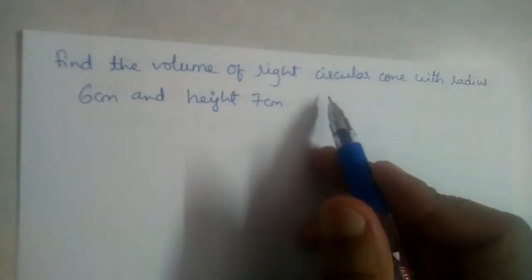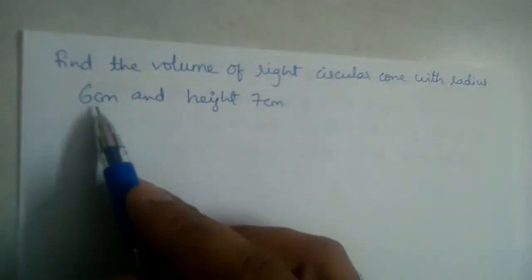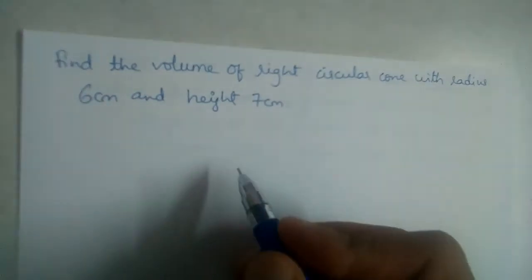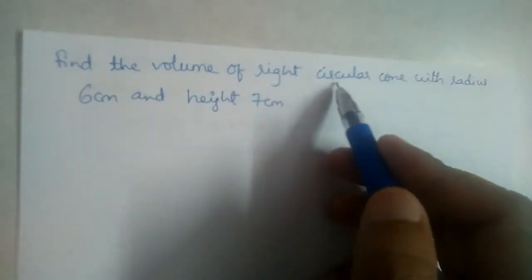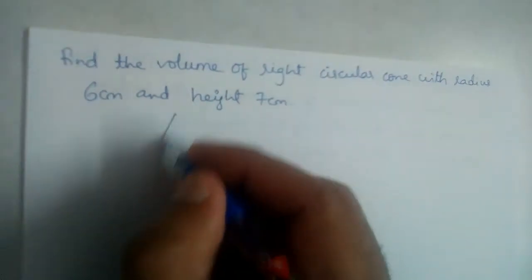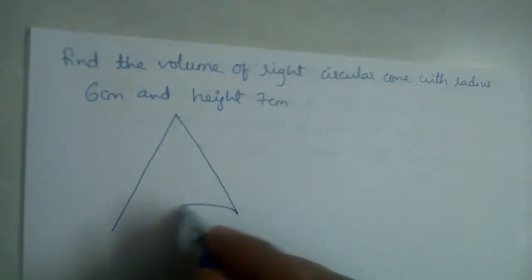Find the volume of a right circular cone with radius 6 centimeters and height 7 centimeters. We need to find the volume of a right circular cone, so let us draw one.